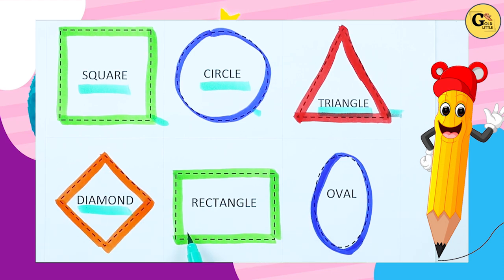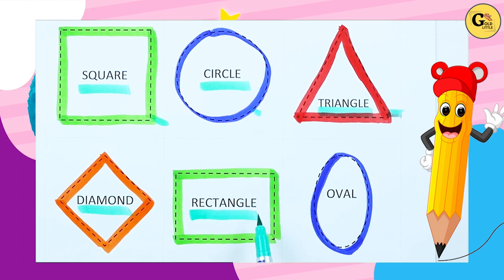Which shape is this? Rectangle. R-E-C-T-A-N-G-L-E. It's a rectangle, with green color.